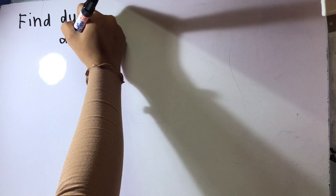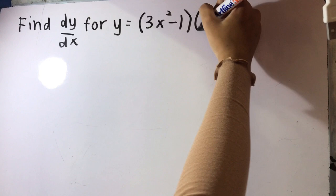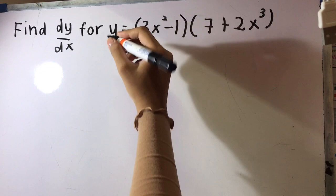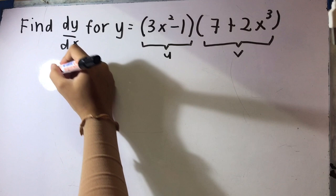To find dy/dx for y equals (3x² - 1) times (7 + 2x³). First we choose u and v because we are using the product rule. Let u